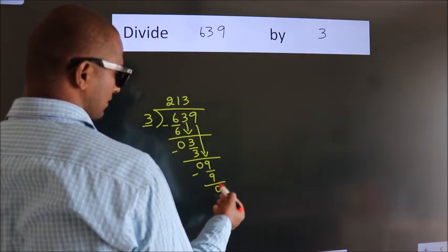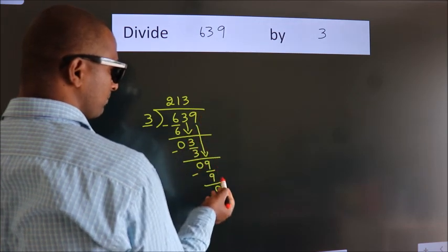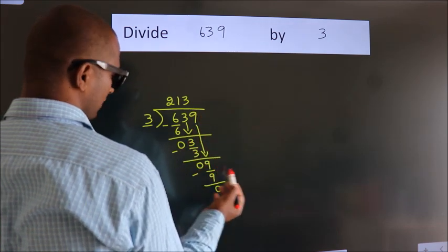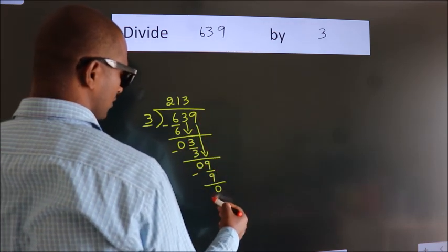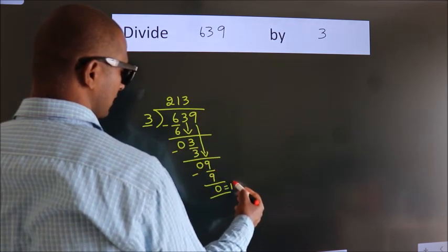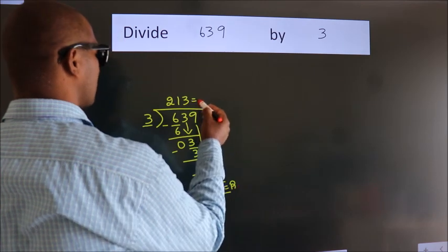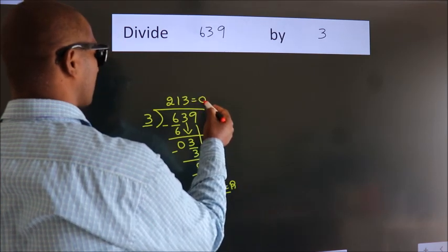After this, no more numbers to bring it down. So, we stop here. This is our remainder. This is our quotient.